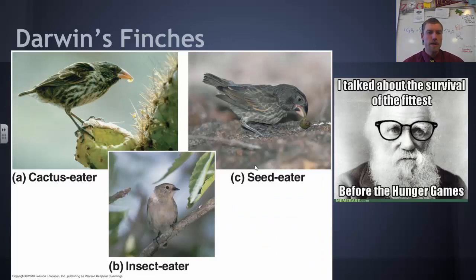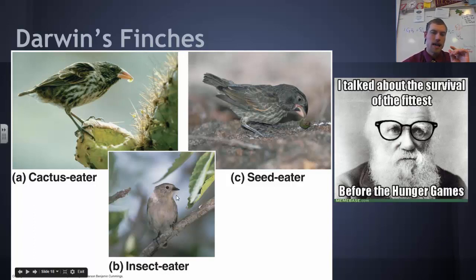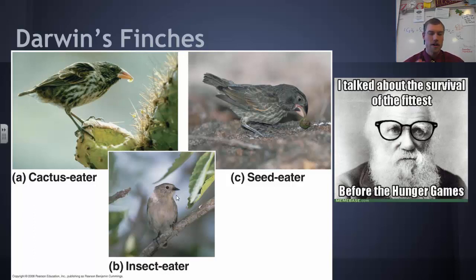Another example of evolution by natural selection is Darwin's finches. You can clearly see the different beak styles. This is a cactus eater with a small beak to reach into the cactus. We've got seed eaters with a very large beak for cracking open seeds. And then an insect eater with very small, narrow beaks — very good for reaching into holes, grabbing insects, and pulling them out.